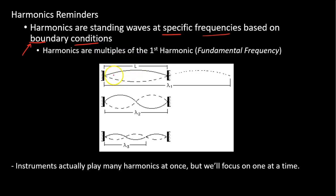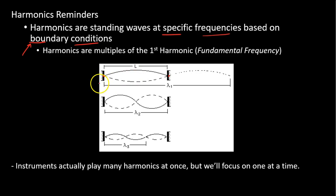For example, for stringed instruments, the boundary conditions of those strings — well, they're always tied off. Whether it's a guitar, a bass, a violin, or a harp, they're always locked in place. So that was my rule. The simplest standing wave I could make that followed that boundary condition was this one right here. This right here is the first harmonic, or the fundamental.